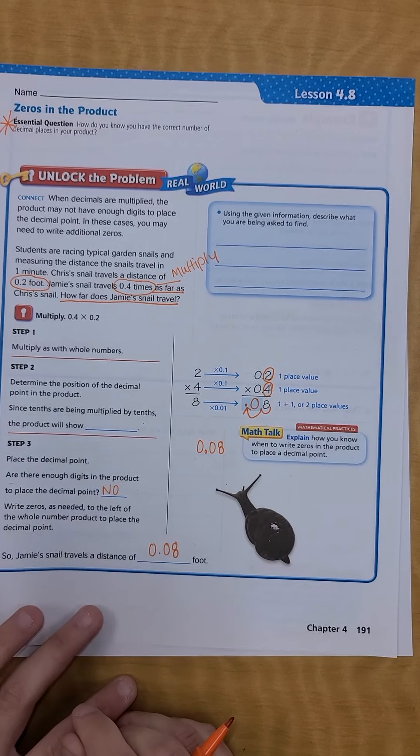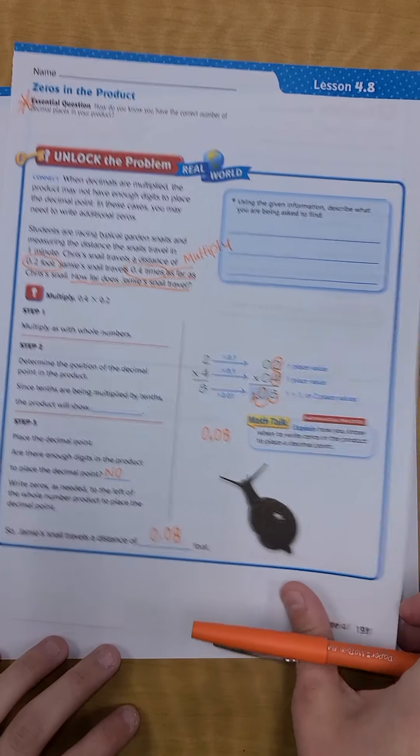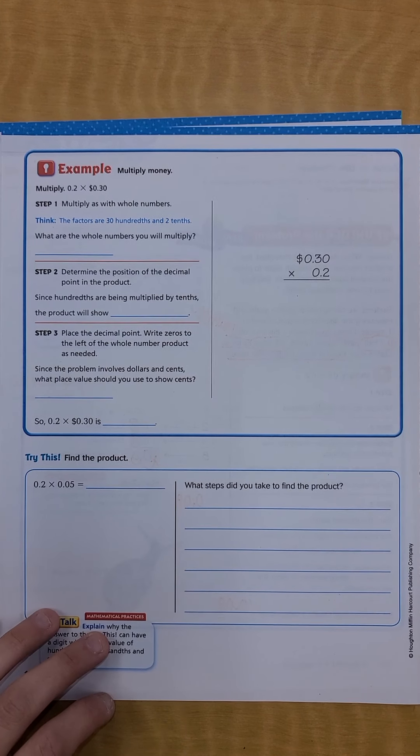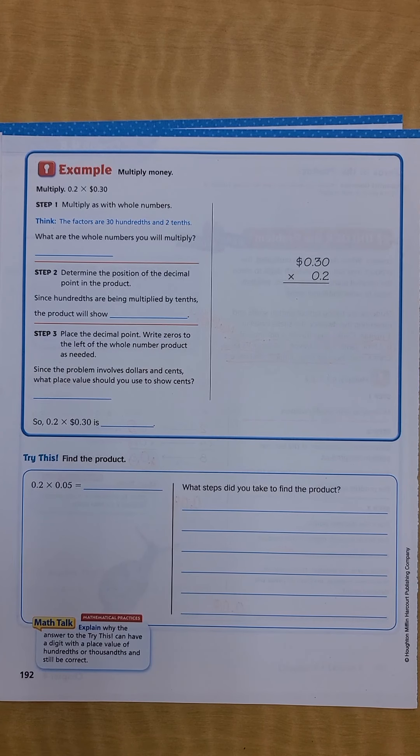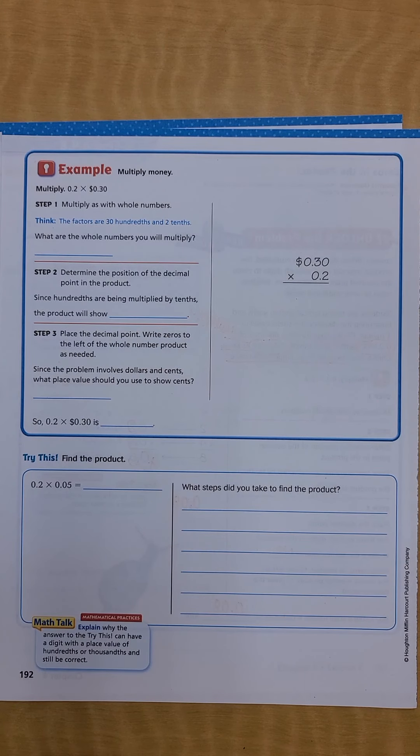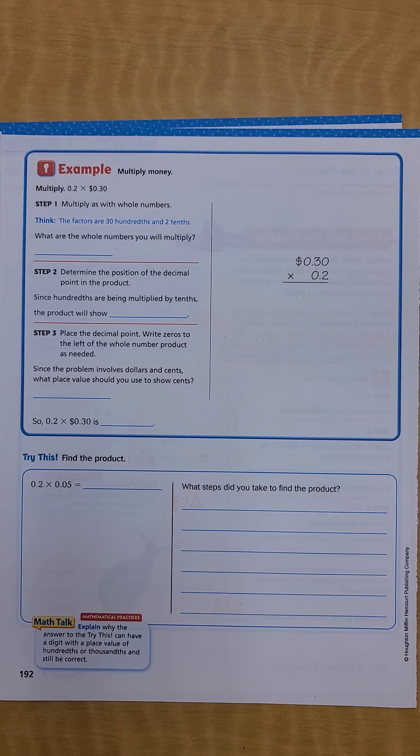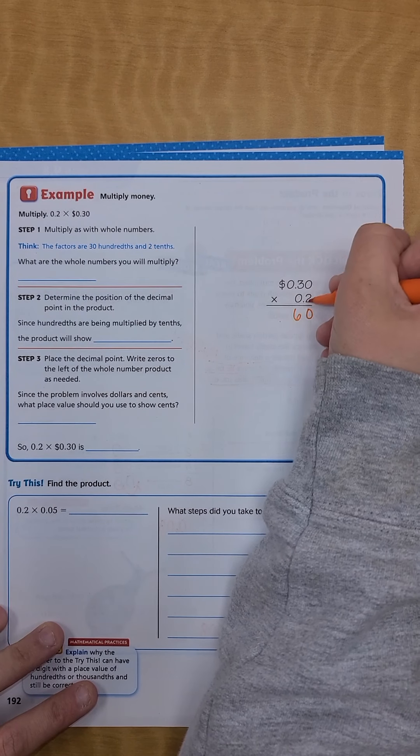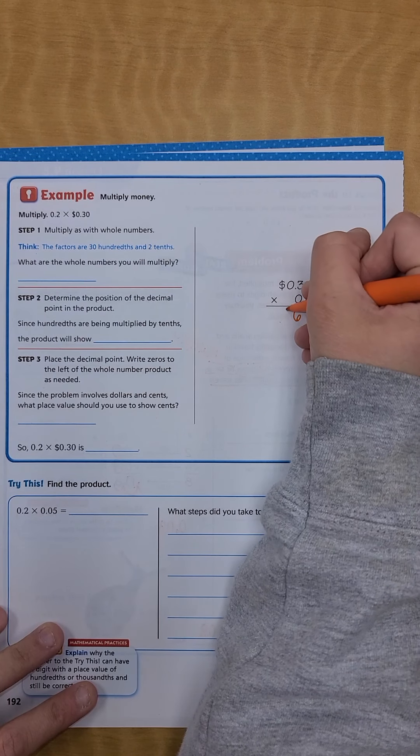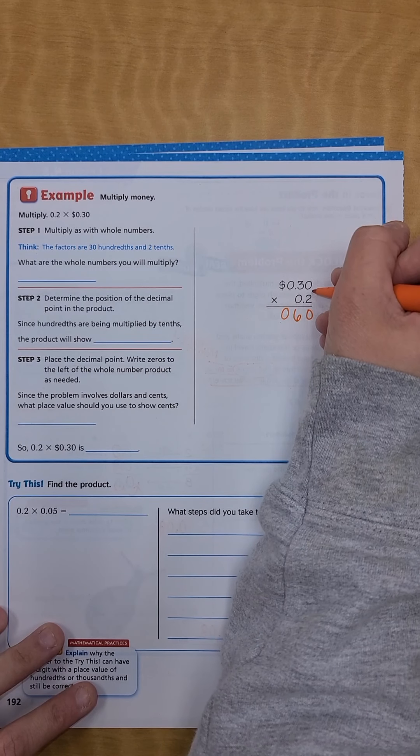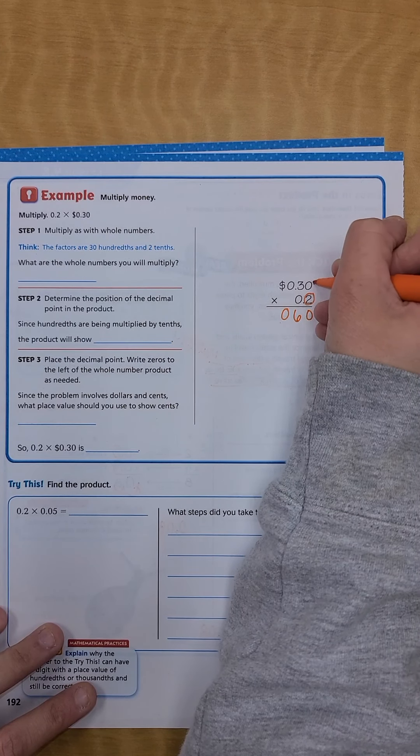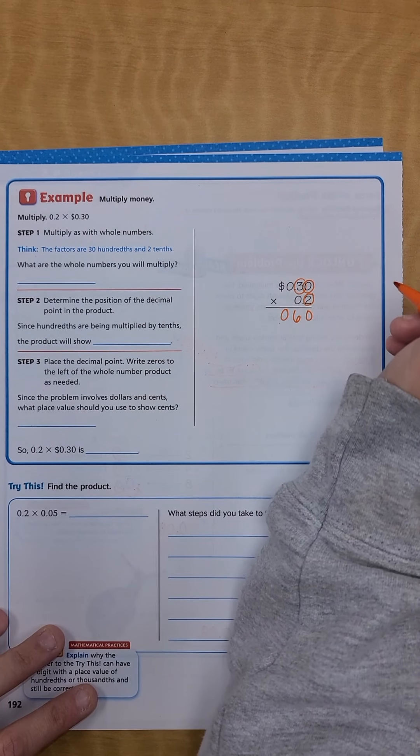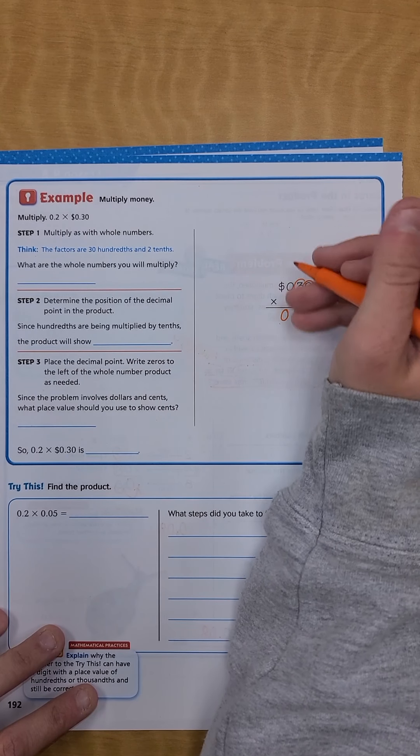So Jamie's snail travels a distance of eight hundredths foot. All right, so let's go to the back of this page. It says multiply 0.2 times thirty cents. You would multiply as with whole numbers. Zero times two is zero, three times two is six. That's a zero and nothing else is going to change.